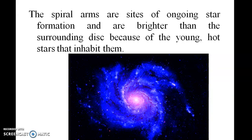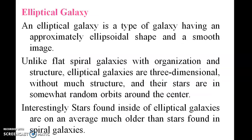The spiral arms are sites of ongoing star formation and are brighter than the surrounding disc because of the young hot stars that inhabit them. An elliptical galaxy is a type of galaxy having an approximately ellipsoidal shape and smooth appearance. Unlike flat spiral galaxies, elliptical galaxies are three-dimensional without much structure, and their stars are in somewhat random orbits around the center. Stars found inside elliptical galaxies are on average much older than stars found in spiral galaxies.